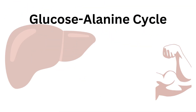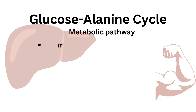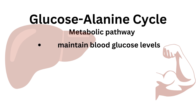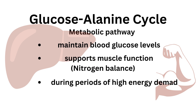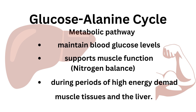What is the glucose-alanine cycle? The glucose-alanine cycle is a crucial metabolic pathway that helps maintain blood glucose levels and supports muscle function during periods of high energy demand. It occurs primarily between muscle tissues and the liver.